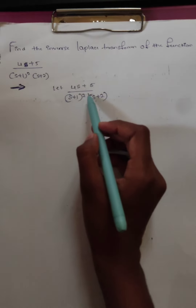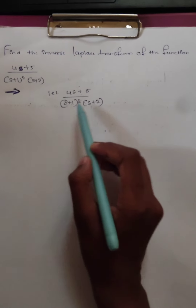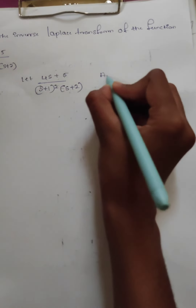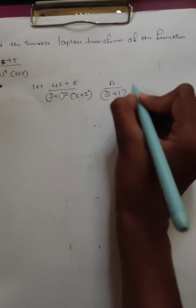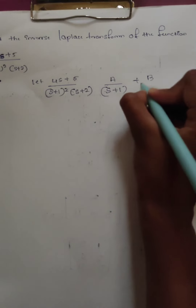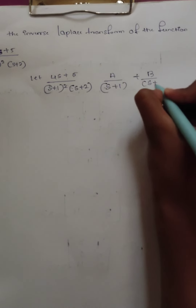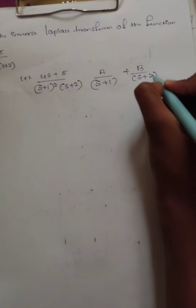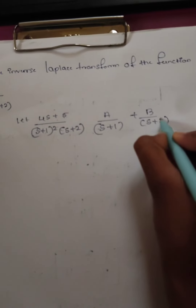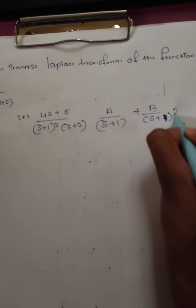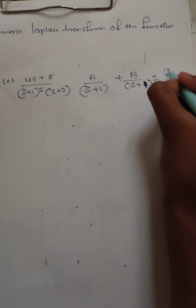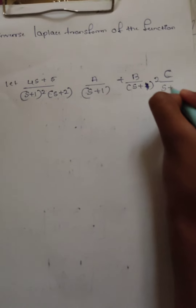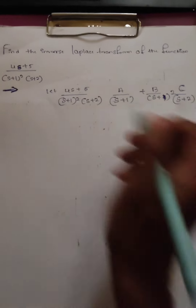This is a proper fraction. The numerator is degree 1 and the denominator is degree 3. Let the partial fraction decomposition be: A upon (s plus 1), plus B upon (s plus 1) whole square, plus C upon (s plus 2).